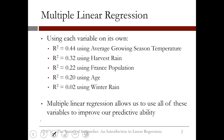We can use each variable in a one-variable regression model. Average growing season temperature gives the best R² of 0.44, followed by harvest rain with an R² of 0.32. France population and age both give models with an R² around 0.2, and winter rain gives a pretty low R² of 0.02, or just barely better than the baseline. So if we only used one variable, average growing season temperature is the best choice.